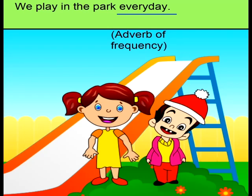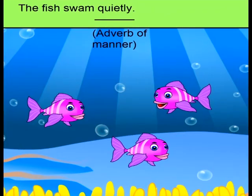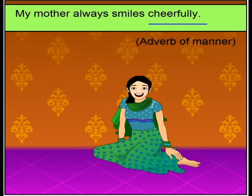How often do we play in the park? We play in the park every day. How did the fish swim? The fish swam quietly — quietly is an adverb of manner. It tells us the manner in which the fish is swimming.